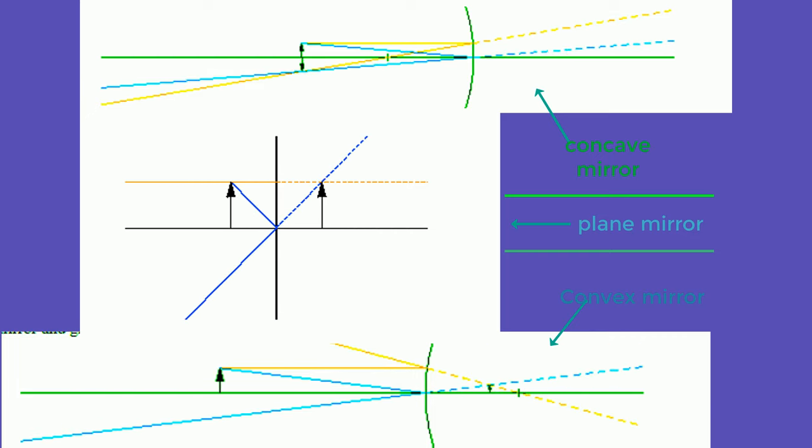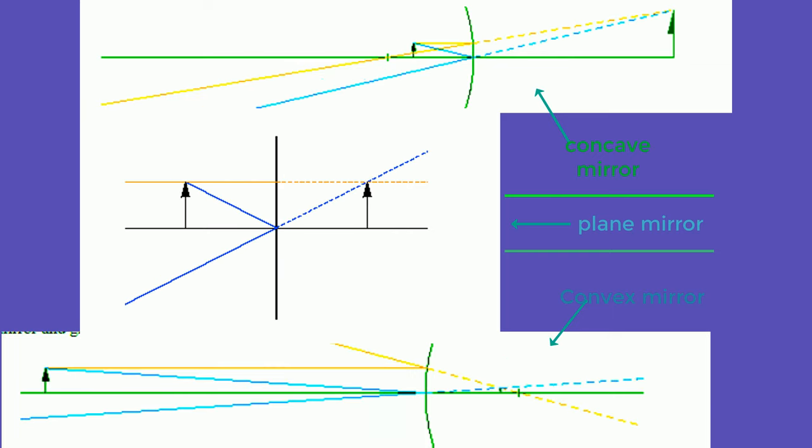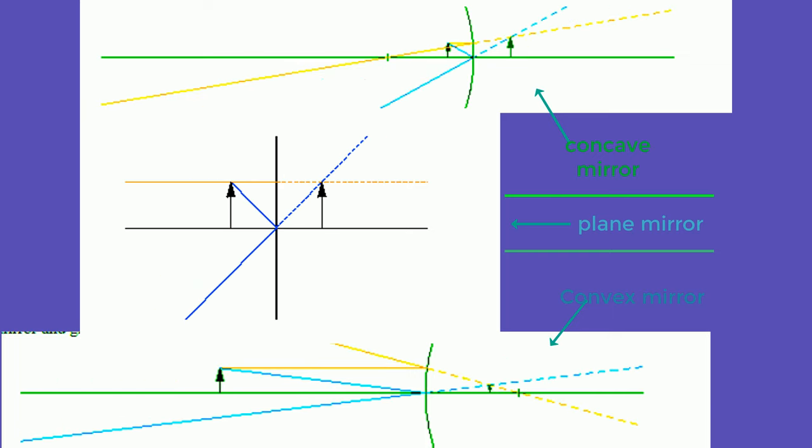The shown diagrams shows how each of concave, plane and convex mirrors reflect light.